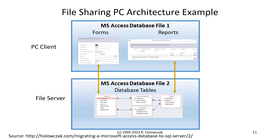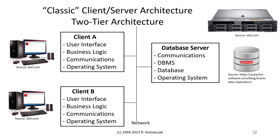One of the big disadvantages to the file sharing architecture is the inefficiency in the way data is shared. It would really be ideal if we just had one copy of the database management system that could handle processing our transactions. And indeed, that architecture is called the two-tier client server architecture.